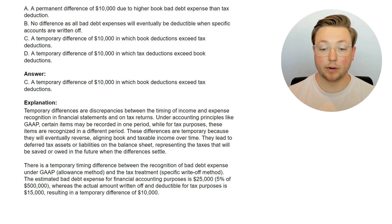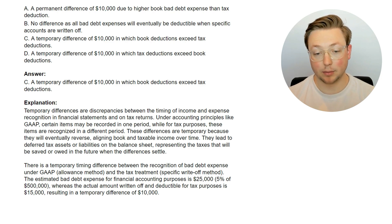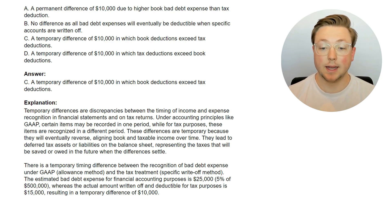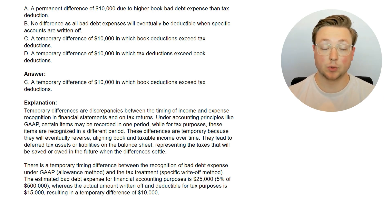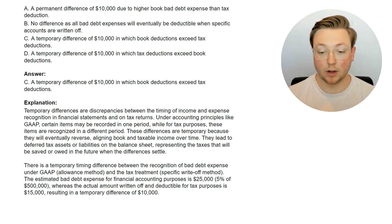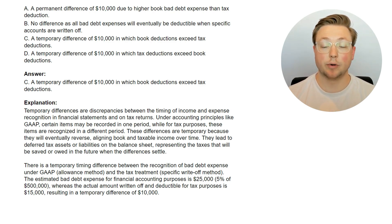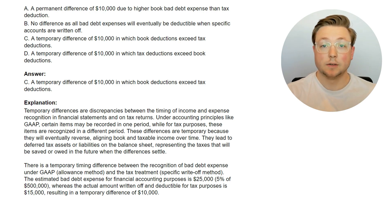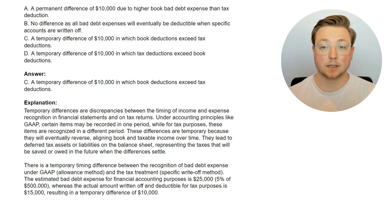In this situation, there is a temporary timing difference between the recognition of bad debt expense under GAAP, which uses the allowance method, and the tax treatment, which uses the specific write-off method. The estimated bad debt expense for financial accounting purposes is $25,000 — that's 5% of $500,000 — whereas the actual amount written off and deductible for tax purposes is $15,000, resulting in a temporary difference of $10,000.